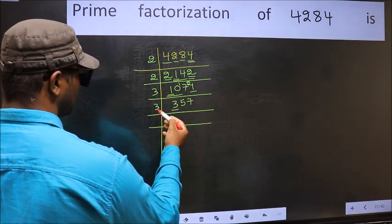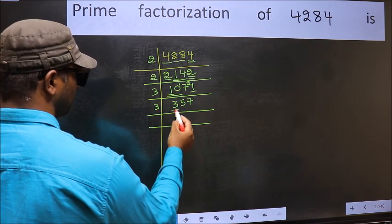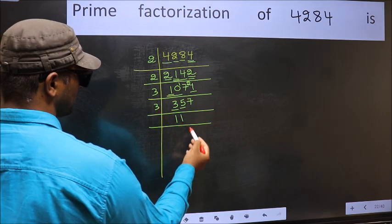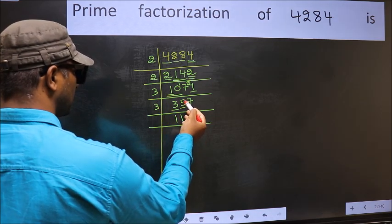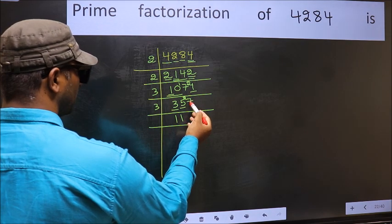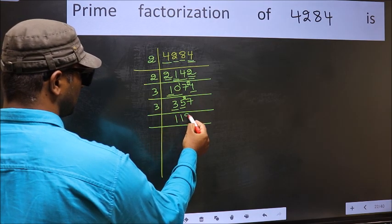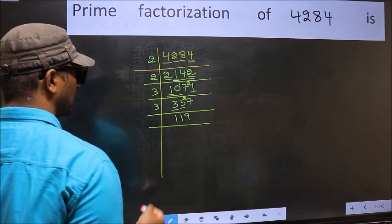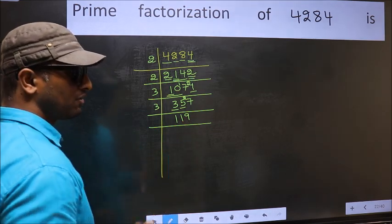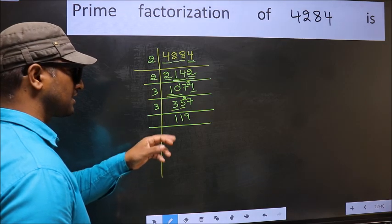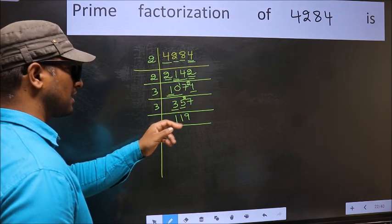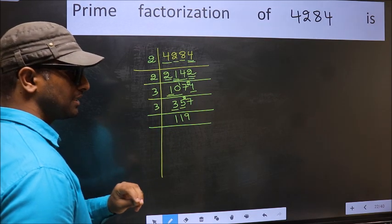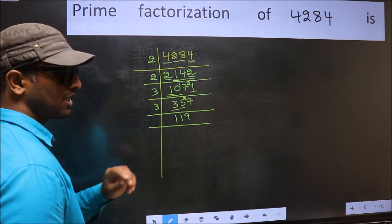To check whether 357 is divisible by 3 or not, add the digits: 3 plus 5 plus 7 equals 15, and 15 is divisible by 3. So this number is also divisible by 3. Take 3 here. First number 3 — when do we get 3 in the 3 table? 3 times 1 is 3. The other number 5: a number close to 5 in the 3 table is 3 times 1 is 3. 5 minus 3 is 2; 2 carried forward gives 27. When do we get 27 in the 3 table? 3 times 9 is 27. To check whether 119 is divisible by 3: add the digits, 1 plus 1 plus 9 equals 11, and 11 is not divisible by 3. So this number is also not divisible by 3.